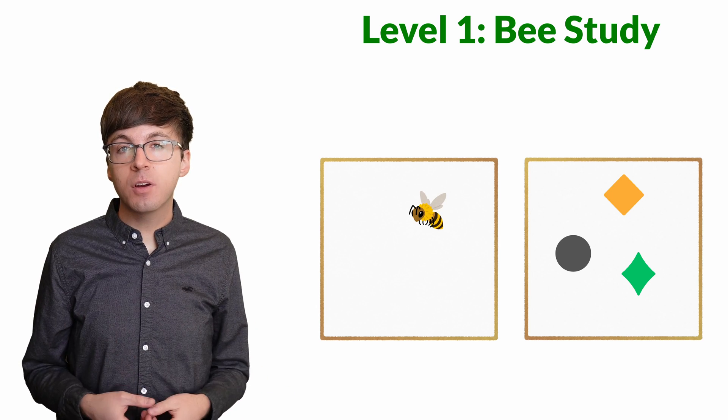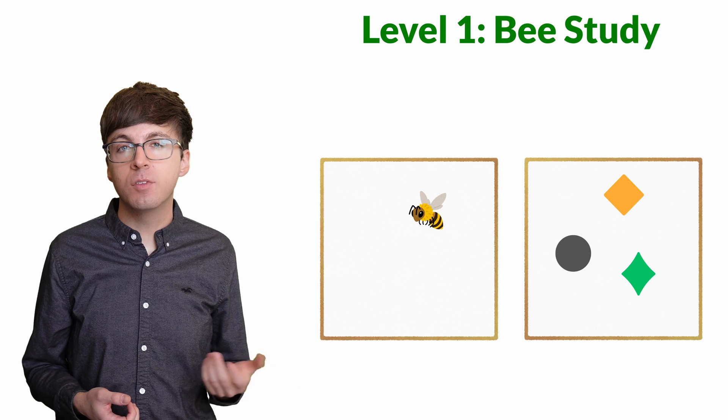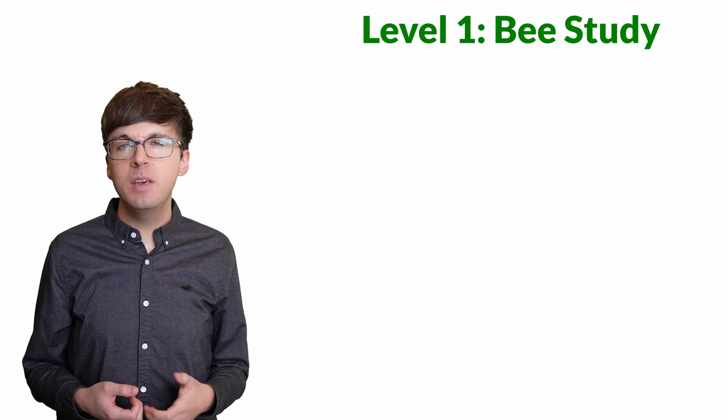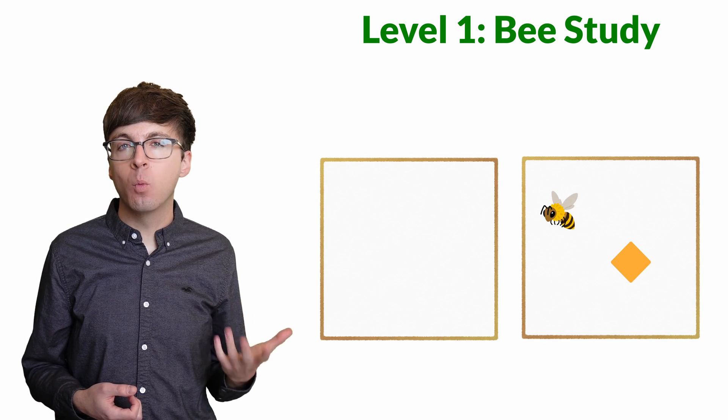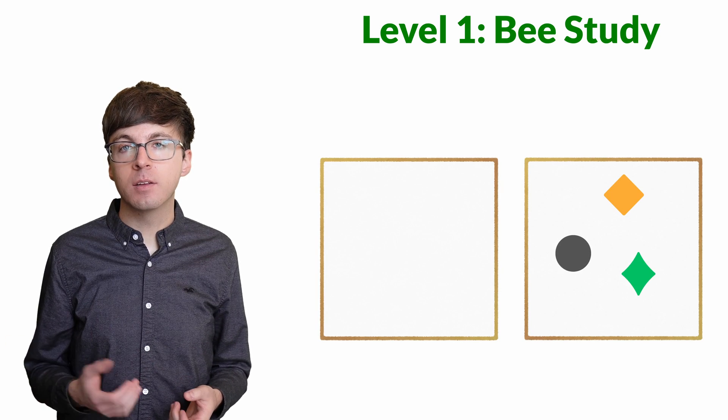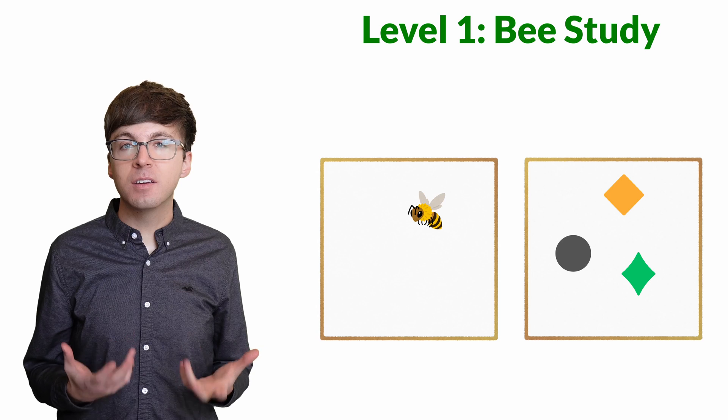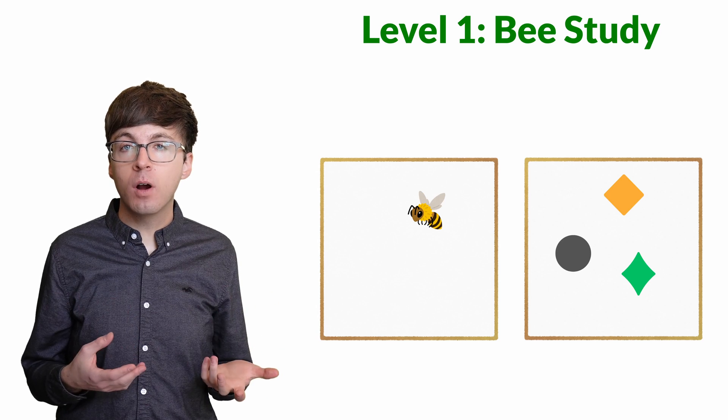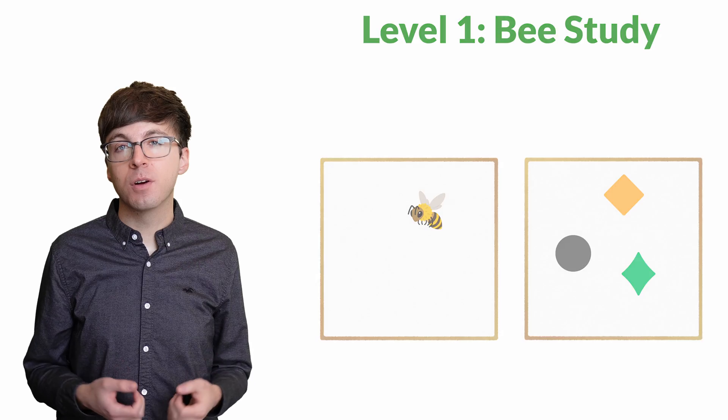And they even seemed to understand the relative position of zero on the number line. The bees were less accurate comparing one versus zero, and were more accurate comparing three against zero. Even bees can conceive of nothing as a quantity that's less than one, what we call zero.